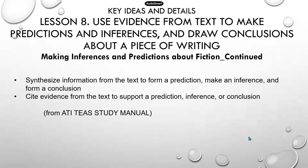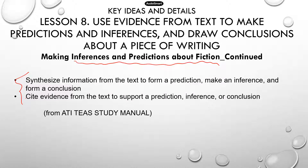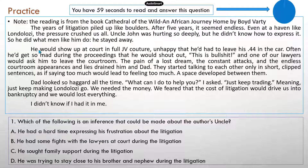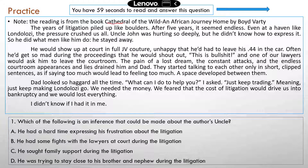Hey everyone, this is the second part of making inferences and predictions about fiction. As you remember, those are the learning objectives we saw in part one, but I just want to leave them there in case you need it. In part two, you're going to have one reading piece with three practice questions. The reading piece is from the book called Cathedral of the Wild: An African Journey Home, written by Boyd Vargy.